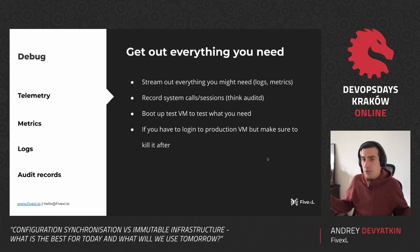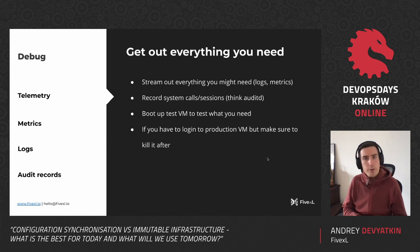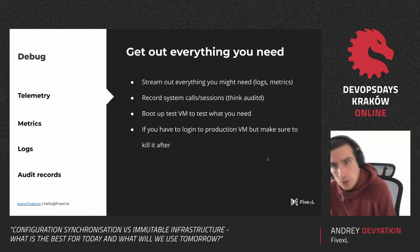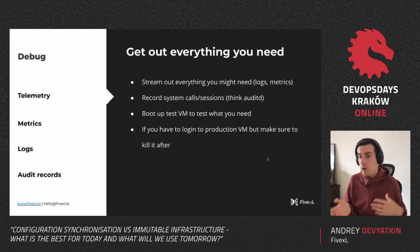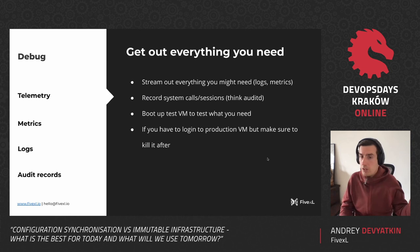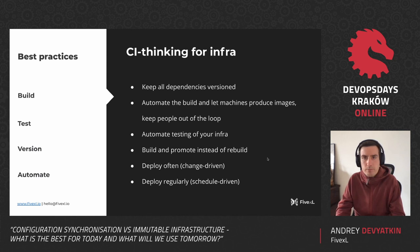For debugging, you need to stream out everything so people don't need to go to the machine. Stream all metrics and all logs — you'll need some kind of agent running to do that. You might also record all system calls and sessions through something like auditd and stream that to a centralized server, so if there's a security incident you have all the information. You might even save the virtual machine image before you discard it, just in case you need to troubleshoot or investigate a security incident. If you need to test something, just boot up another virtual machine — it will be identical to production.